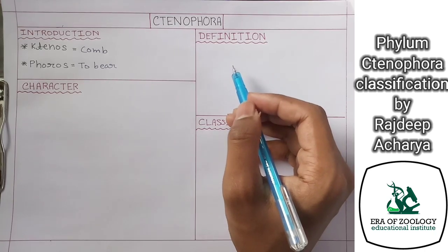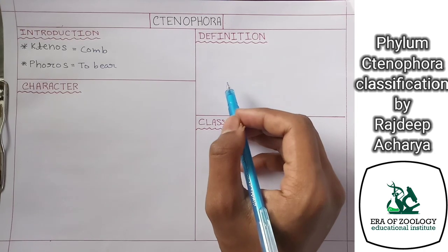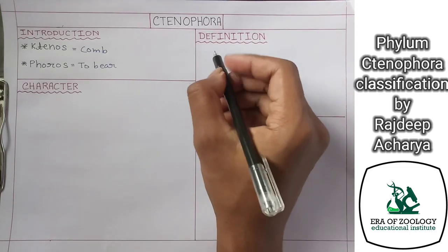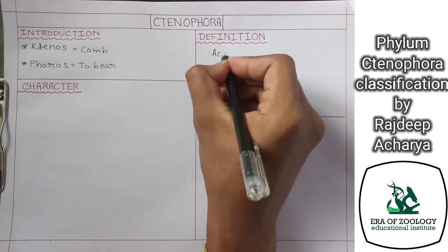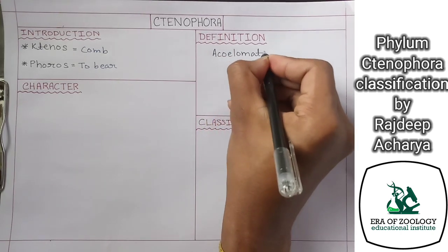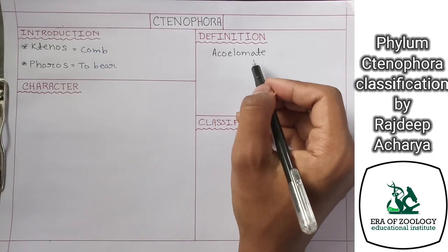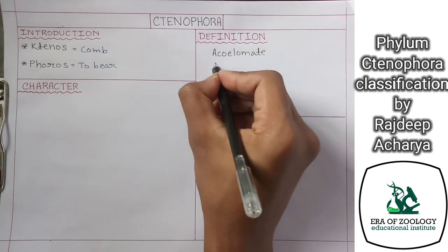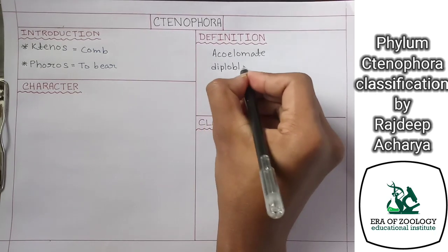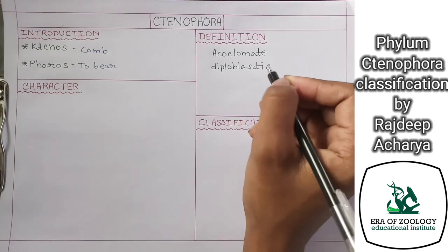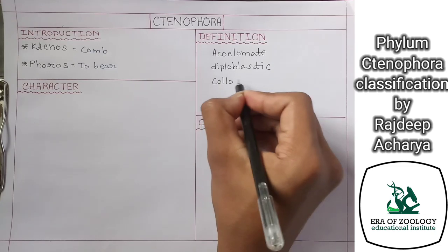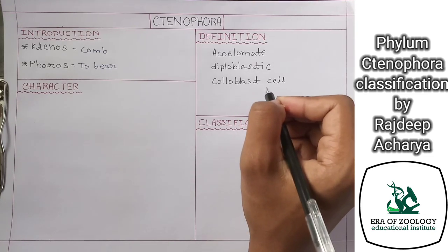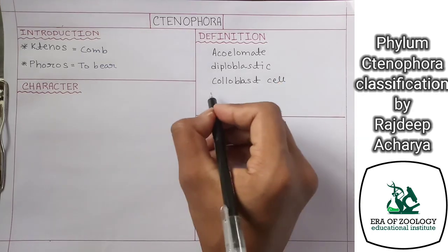Now we will be talking about the definition of Ctenophora — the characteristic features through which we can define this phylum. The first point is a phylum should be acoelomate, meaning it should not have coelom in the organism. The second thing is a phylum should be diploblastic. The third thing is a phylum should have colloblast cells, which are adhesive cells present in the tentacle.